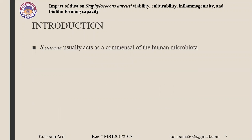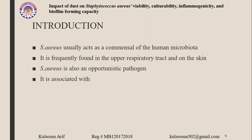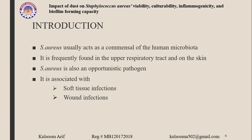Staphylococcus aureus usually acts as a commensal of the human microbiota. An estimated 20% to 30% of the human population are long-term carriers and it can frequently be found in the upper respiratory tract and on the skin. Although it acts as a commensal, it can also become an opportunistic pathogen associated with soft tissue infections, wound infections, and respiratory tract infections that can even lead to death.